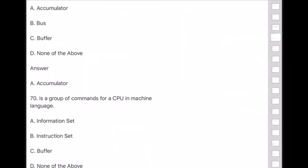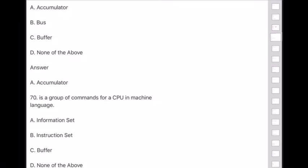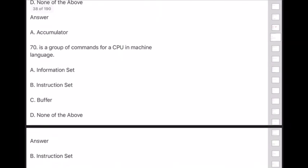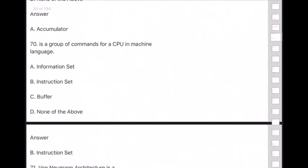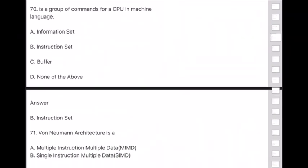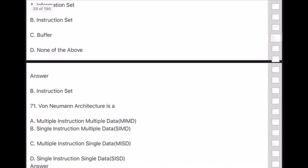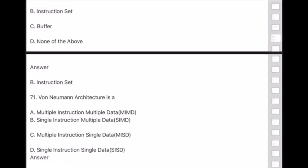Question 70: A group of commands for a CPU in machine language is called — answer is — instruction set.